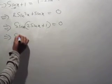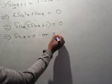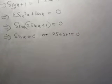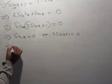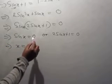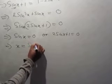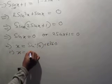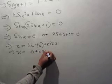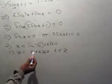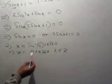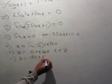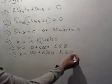Which now implies that either sin x is equal to 0, or 2 sin x plus 1 is equal to 0. We consider sin x equals 0 first, which now implies that x is equal to sin of 0, that is 0 plus k360, which now means x is equal to 0 plus k360, for k an element of integers. We also say 180 minus 0, which now means x is equal to 180 plus k360, still k is an element of integers.